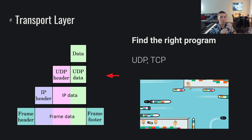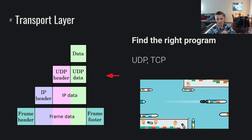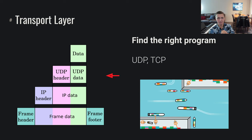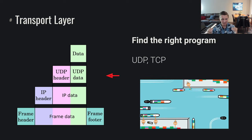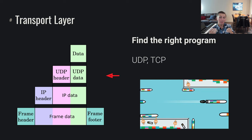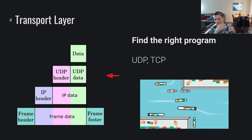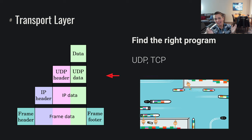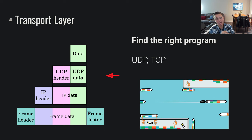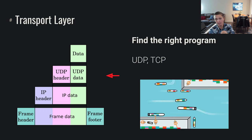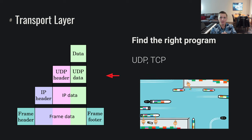There are several programs running on a system and we want to get to the right program. As we'll discuss in the networking series, the transport layer provides other facilities as well. For instance, TCP provides the ability to have a circuit connection and provides reliability — because you might wonder what happens if your data is being transmitted and the packet gets lost as it's routing through the network. TCP addresses that concern. At its core, the transport layer deals with finding the right program on a system.